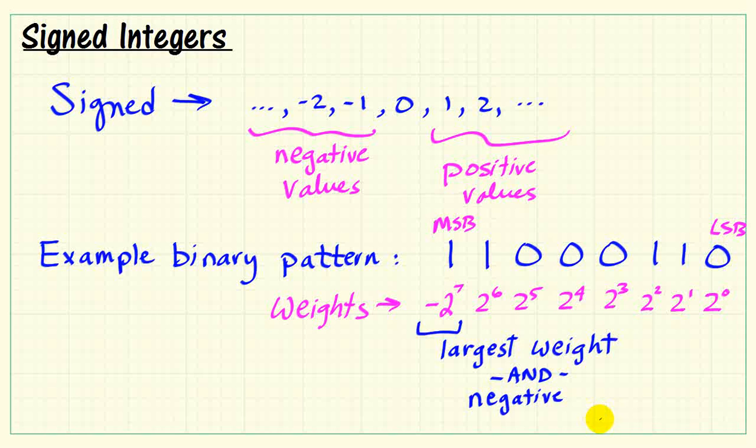It turns out the MSB doubles as a weight and the sign bit. So when that MSB is 1, we know we're looking at a negative value.